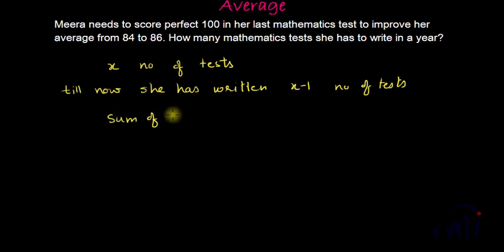And her average is 84. That means sum of X minus 1 marks divided by X minus 1 is equal to 84.